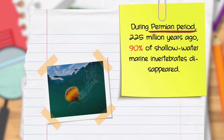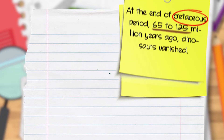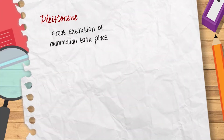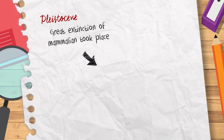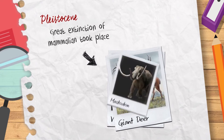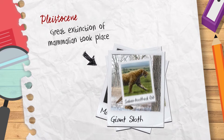During the Permian period, 225 million years ago, 90% of shallow water marine invertebrates disappeared. At the end of the Cretaceous period, 65 to 125 million years ago, dinosaurs vanished. A great extinction of mammals took place during the Pleistocene, when the woolly mammoth, giant deer, mastodon, giant sloth, and saber-tooth cat vanished from the Earth.